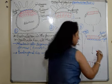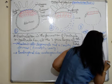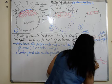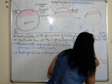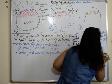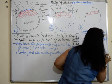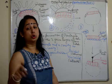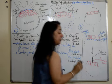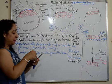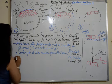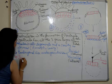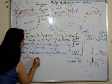This invagination or depression is known as the primitive streak. From this depression arises a knob-like structure at the top called the primitive knob. The primitive streak is said to undergo the formation of the notochord in future.